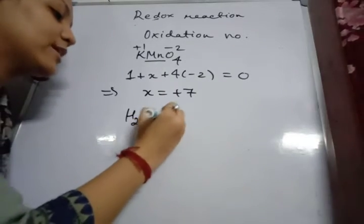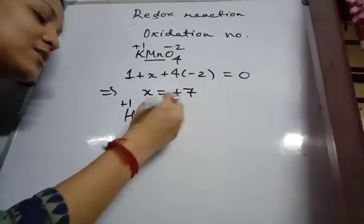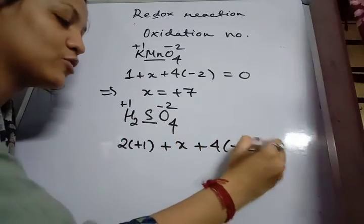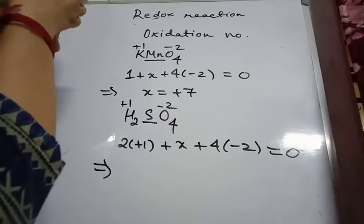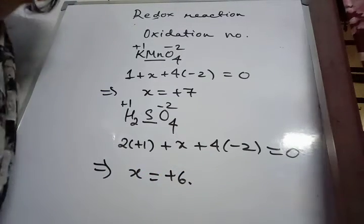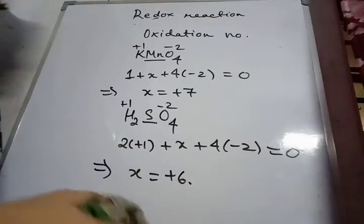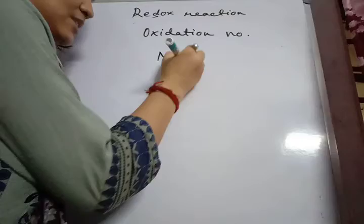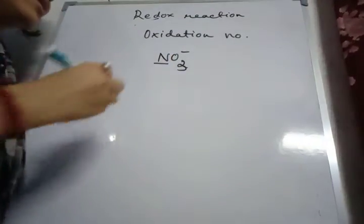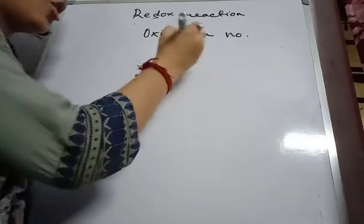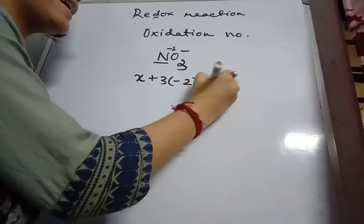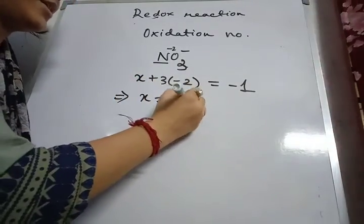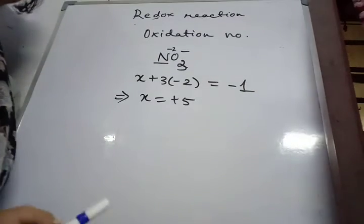Next example: calculate the oxidation number of sulfur in sulfuric acid (H2SO4). Hydrogen is plus one, oxygen is minus two. So: 2×(+1) + X + 4×(−2) = 0, giving X equals plus six. Next, for an ionic species — nitrate (NO3−) — calculate the oxidation number of nitrogen. Let nitrogen be X, oxygen is minus two: X + 3×(−2) = −1, so X equals plus five. These are the methods by which you calculate the oxidation number of a given atom.